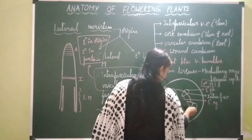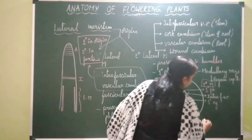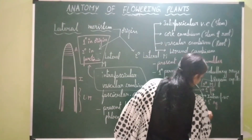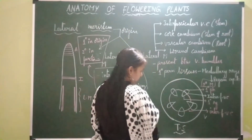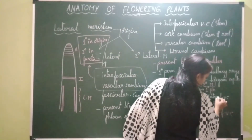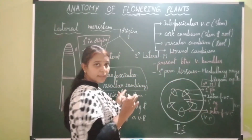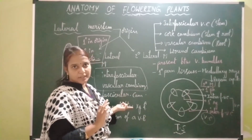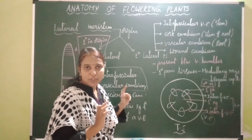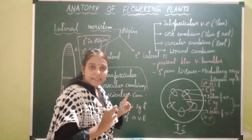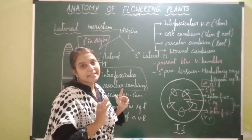After formation of interfascicular cambium, both intrafascicular cambium and interfascicular cambium join together to form a complete ring of vascular cambium. So intra and inter together result in the formation of vascular cambium. The vascular cambium of dicot stem and gymnosperms is partly primary in origin — intrafascicular — and partly secondary in origin — interfascicular.